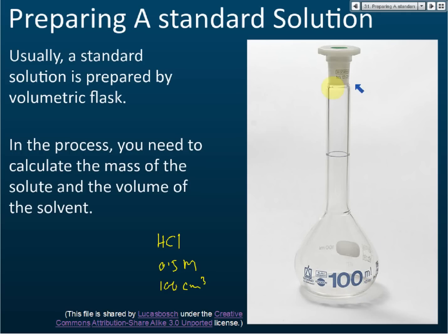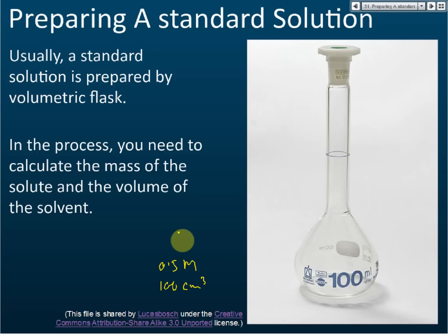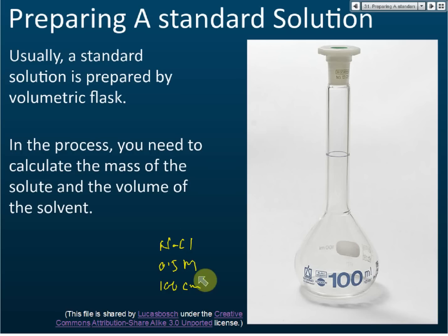We choose the 100 ml volumetric flask — no problem there. But if we want to prepare 0.5 molar sodium chloride — let's use sodium chloride instead of HCl since HCl is a gas — how many grams of sodium chloride do you need to add to the flask so that the concentration is 0.5 molar? That is the calculation we are going to learn for preparing a standard solution.